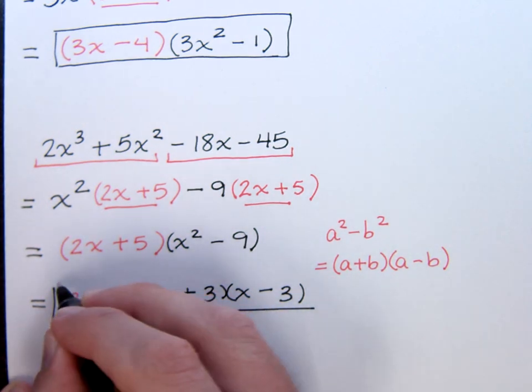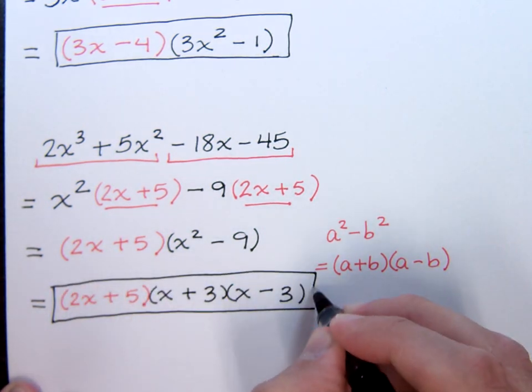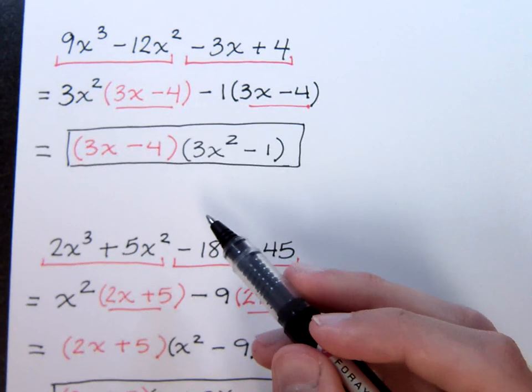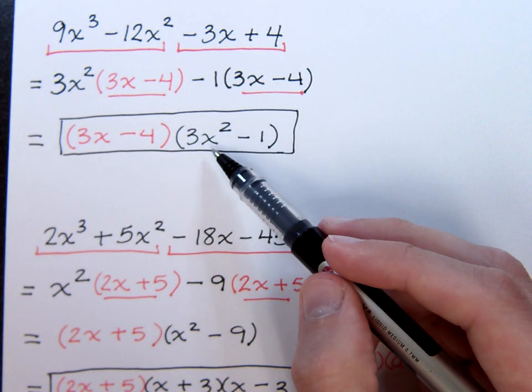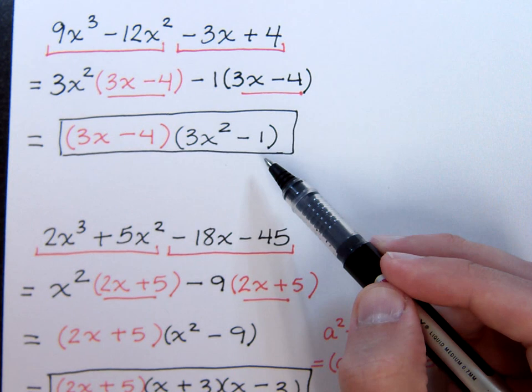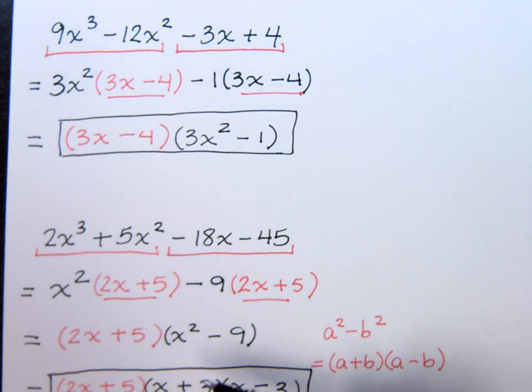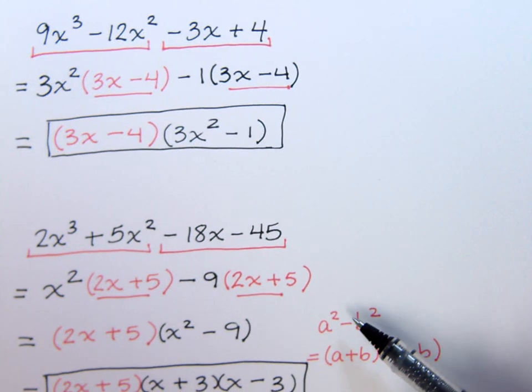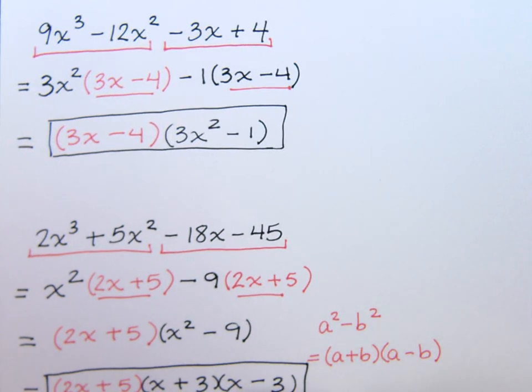Remember, just because you have an x squared, that does not mean that there's more that can be factored. In this last example, I had three x squared minus one, but I couldn't do anything else with that. In this problem, I had x squared minus nine that matched up with this difference of squares. And that gave me x plus three, x minus three, along with the two x plus five factor here.